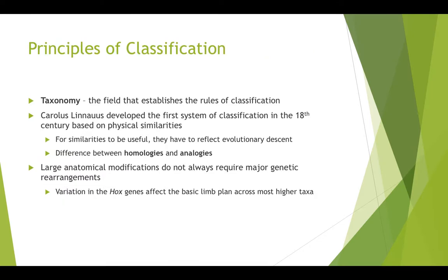Taxonomy is the field that establishes the rules of classification, and it was developed by Carolus Linnaeus in the 18th century. He based his taxonomic categories on physical similarities. He didn't have the wealth of genetic information that we have today, which helps us to put together a more complex and clearly defined system of categorization, but he was looking at just the observable physical features that species had.